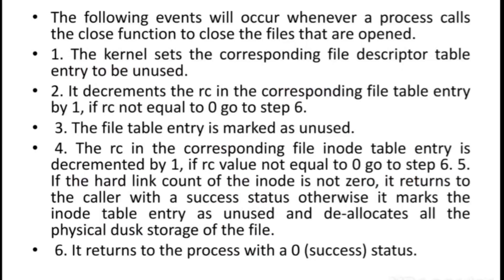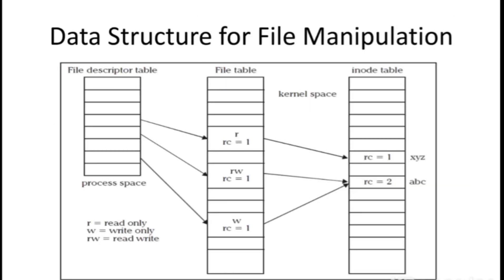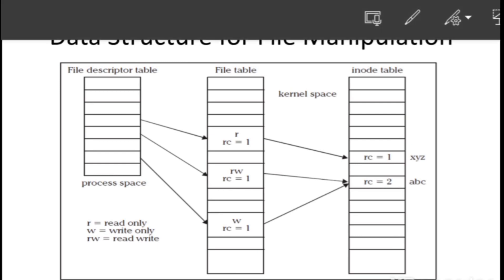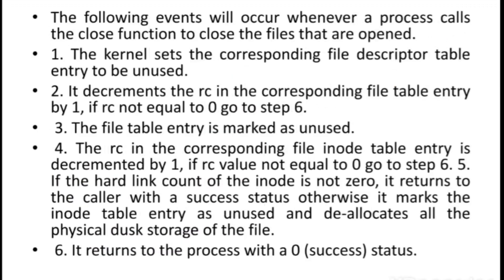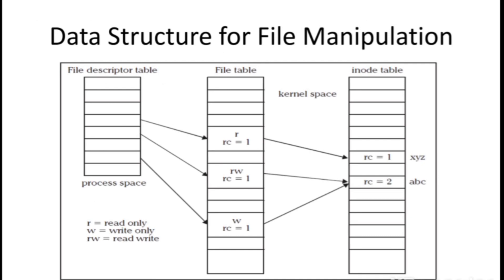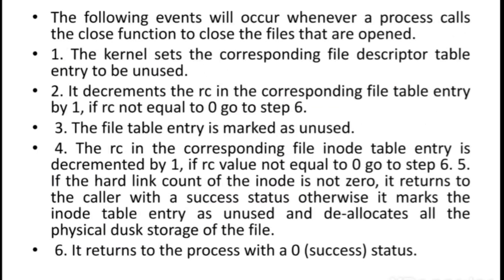When a process calls the close function to close a file, the kernel sets the corresponding file descriptor table entry to be unused — the entries in the file descriptor table are marked as unused. Next it decrements the reference count RC. If the RC is not equal to zero, it goes to step 6 and returns with success status, since other references still exist.